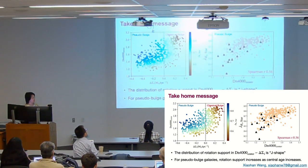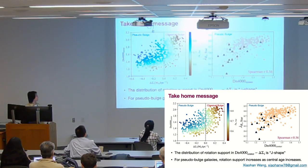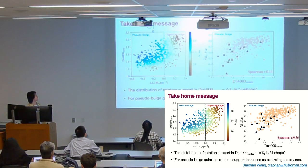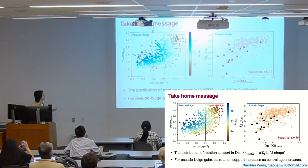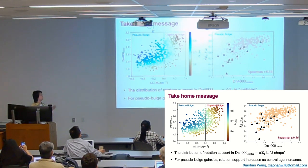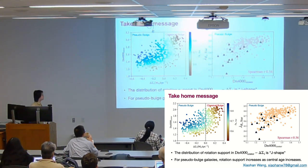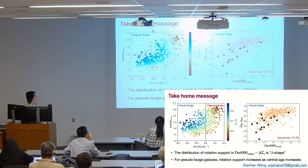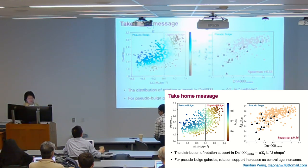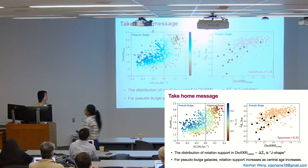The take-home message: I have shown how rotation support is distributed in the bulge parameter space, revealing a G-shaped pattern. For pseudobulges specifically, rotation support increases as the central age increases. I have also discussed possible evolution scenarios and kinematic constraints on bulge evolution. Thank you for your attention.